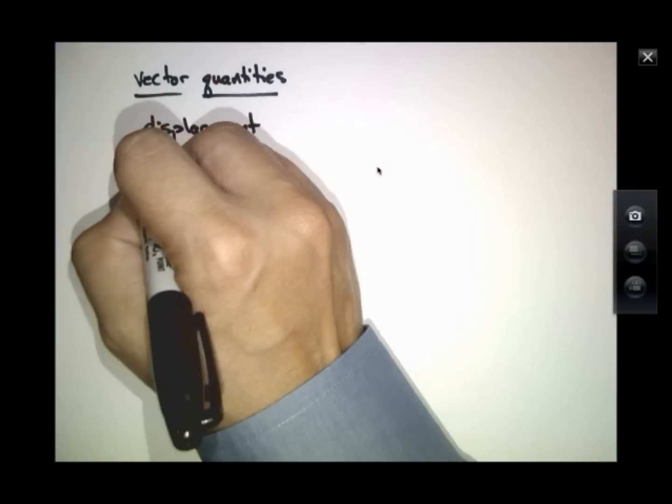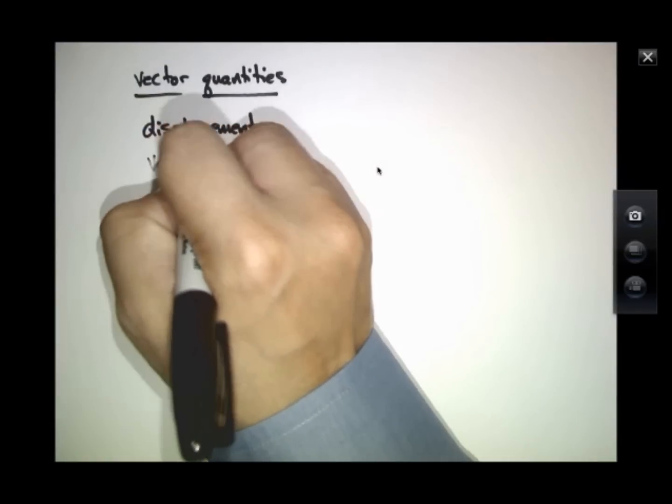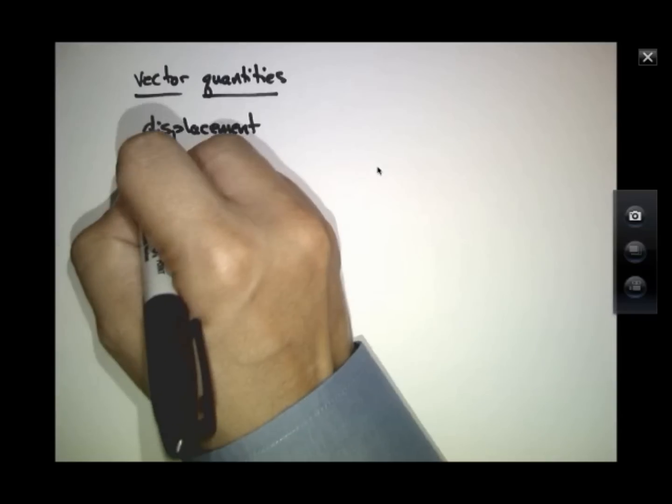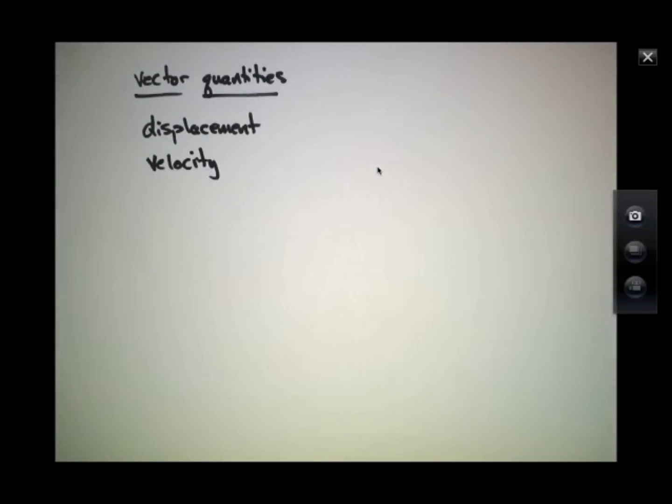Another example of a vector quantity is velocity. In a three-dimensional world, it not only matters that you're moving at 3 meters per second, but in what direction, because many times we're going to write down equations where the direction of the velocity is important, too.